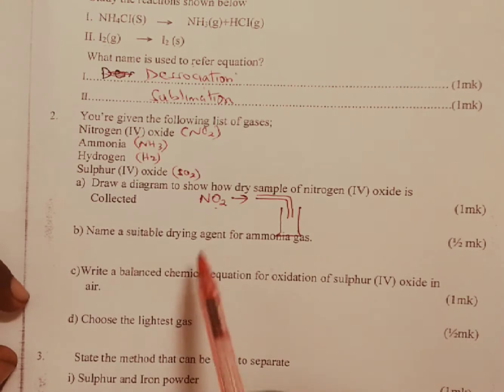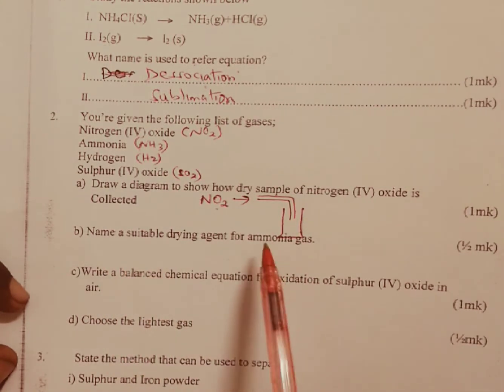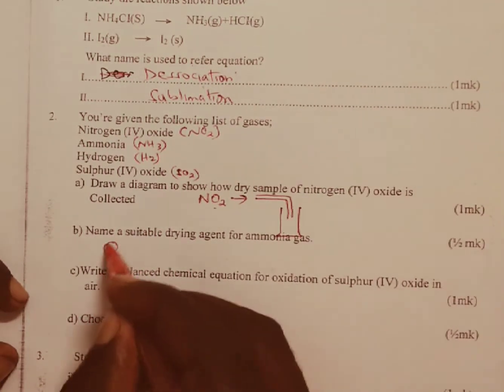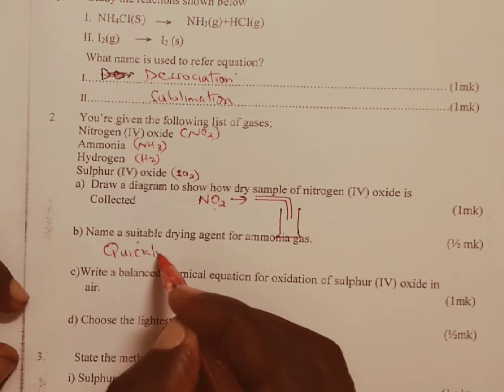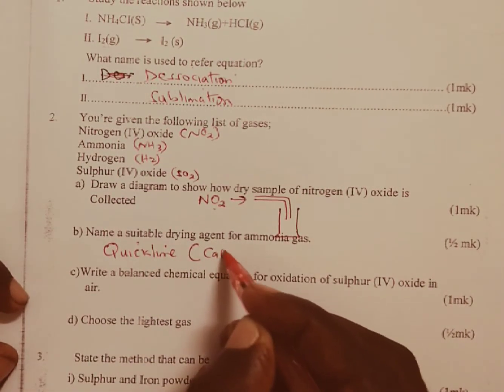Part B of question number 2: Name a suitable drying agent for ammonia. Ammonia gas is dried using quicklime, which is simply calcium oxide, CaO.